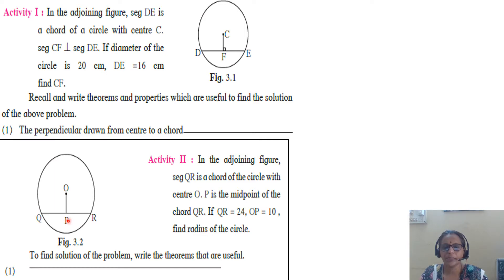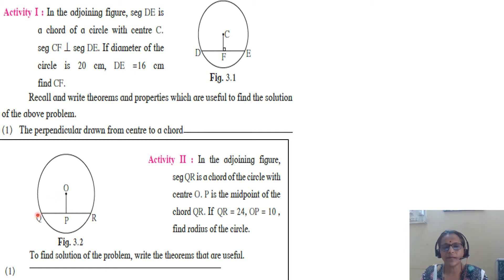Here it is given that P is the midpoint. So, the segment joining the midpoint of the chord and the center of the circle is perpendicular to the chord. So, OP is perpendicular to QR. Join OQ. QP is 12 and OP is 10. Find OQ by applying the Pythagoras theorem. This is your second activity, which you have to write in your activity copy.